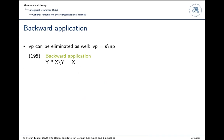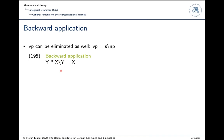There is a second way of combining things: combining elements to the left, called backward application. If we have that, we can replace the VP by S\NP. A VP is basically something that is looking for a subject to the left of itself. The slash here is in a different direction — it's a backslash — and the argument Y is to the left of the functor. The result of the combination is X again.